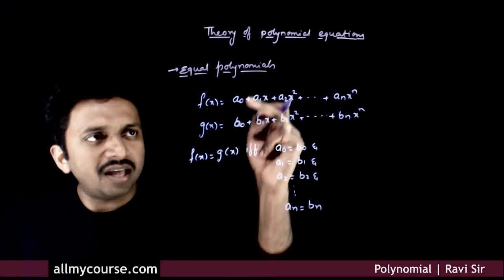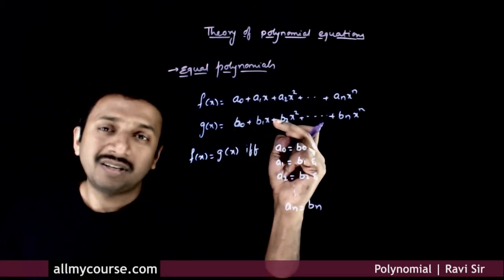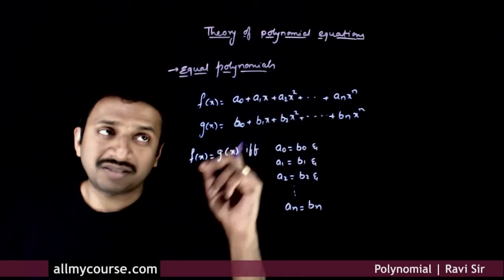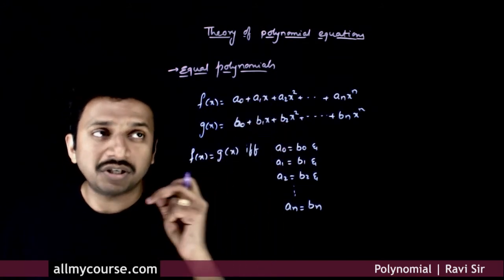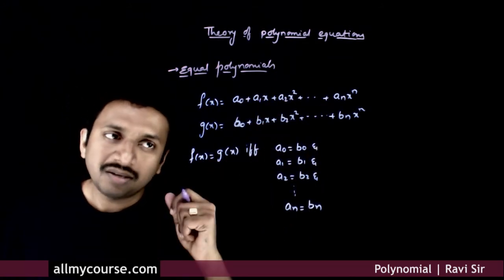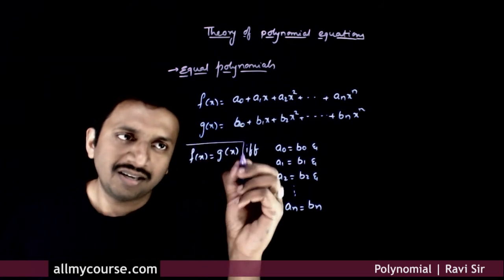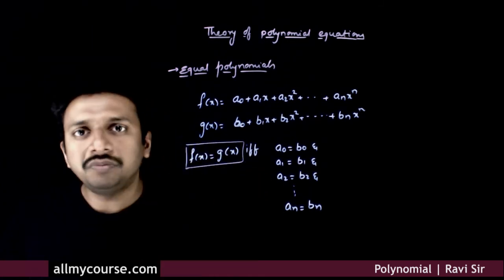So, if each and every coefficient of the like powers of x are equal, then only we can say that f(x) is equal to g(x).